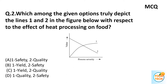Question 2: Which among the given options truly describes Line 1 and Line 2 in the figure below with respect to the effect of heat processing on food? It is an MCQ with only one answer. The answer is A — Line A is safety and Line B is quality.